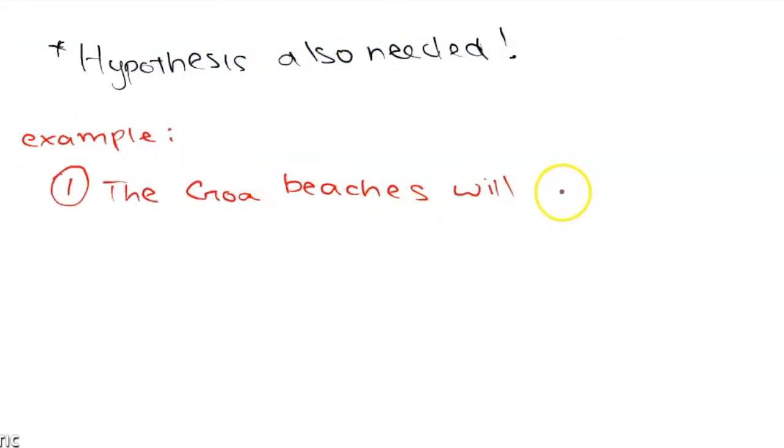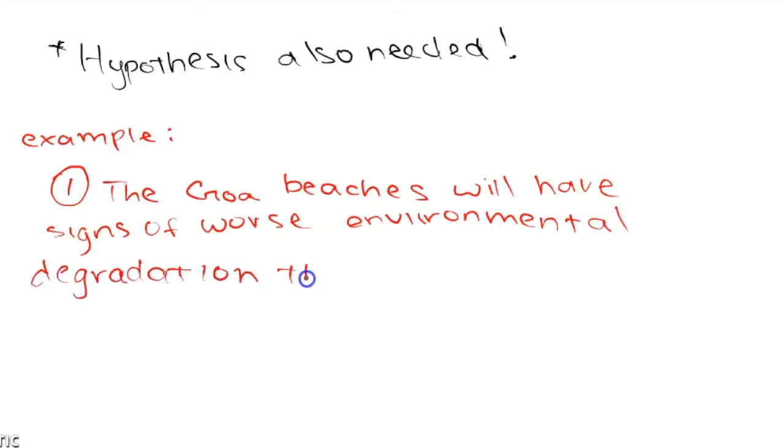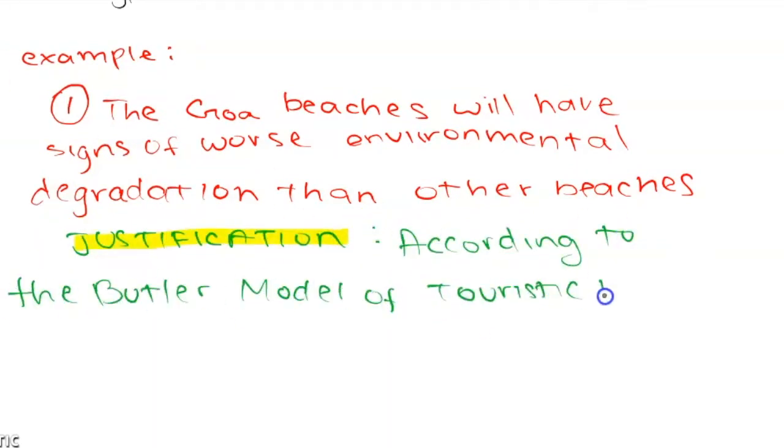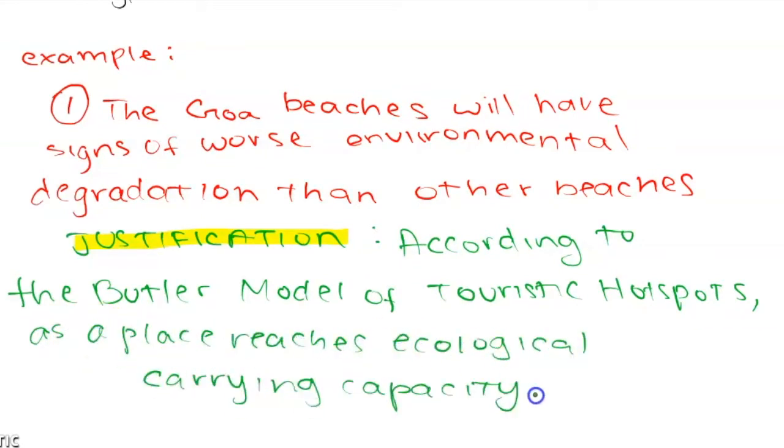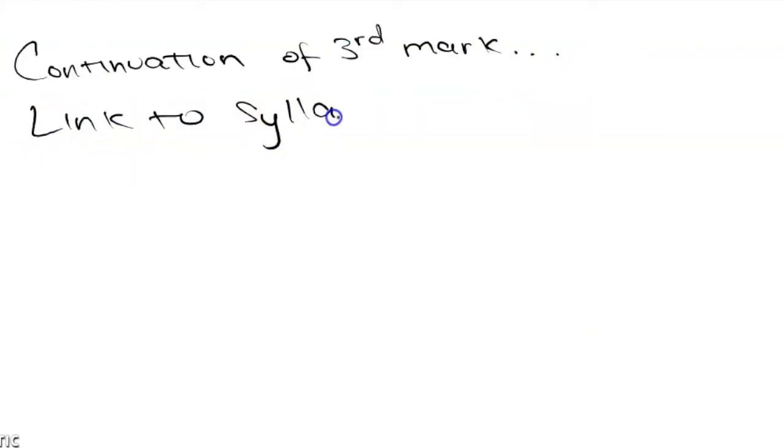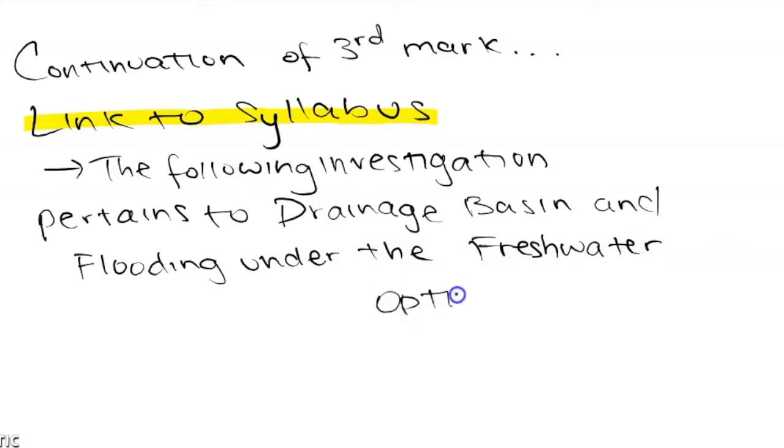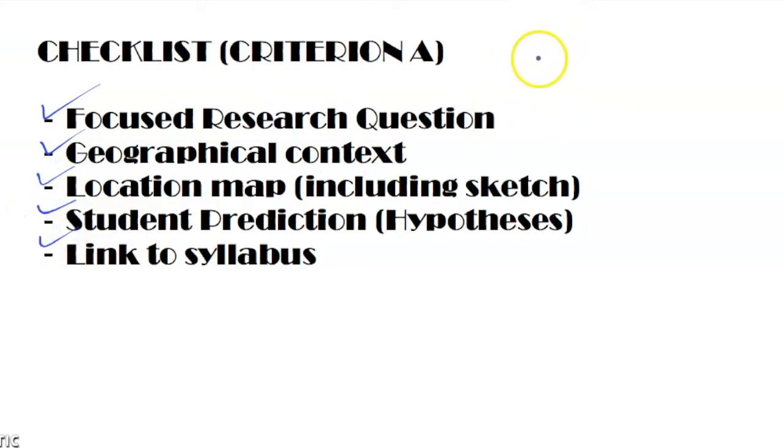You should always try to include a sketch version of the map as well. To get all three marks, you also need to make a student prediction about the fieldwork question. So if the fieldwork question is whether the Goa beaches were negatively affected environmentally by tourism, a student prediction could be that the Goa beaches will have signs of worse environmental degradation than other beaches, and your justification has to be connected to geographical theory. For each hypothesis, make sure to justify that. And in this case, that could be talking about ecological carrying capacity under the tourism unit. You also want to make sure that your hypotheses are not too complex and not too difficult to prove with the data that you've gathered, but they should not be too simple that it limits your ability to analyze. And the last part of this criterion, the link to the syllabus, it can literally take you a sentence, but you just have to clearly say why the fieldwork question is relevant to geography.